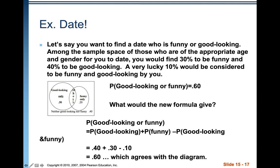Using the formula: probability of good-looking or funny = 0.40 + 0.30 − 0.10 = 0.60, which agrees with the diagram. With a Venn diagram, I tend to just add all the unique events satisfying the condition: good-looking only (0.30) + both (0.10) + funny only (0.20) = 0.60. Both approaches give the same result.